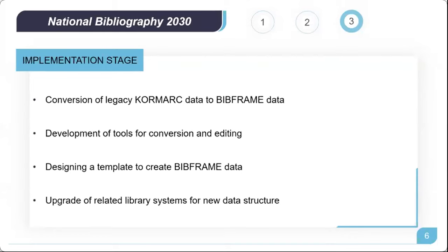In the implementation stage, we will try to convert sample legacy data into BibFrame data to establish a detailed conversion plan. If the plan is ready, all legacy MARC data will be converted to BibFrame data. Tools for BibFrame conversion and editing will be developed in this stage, and we will design templates to create BibFrame data by type of resource.